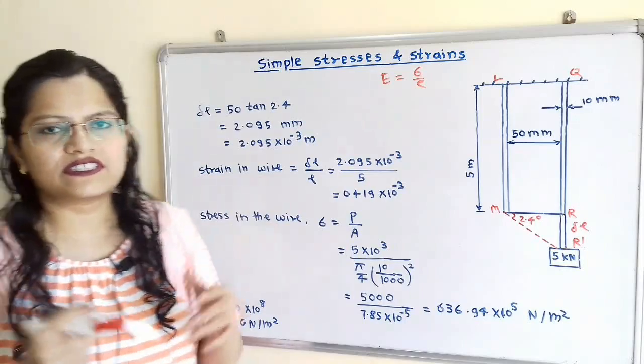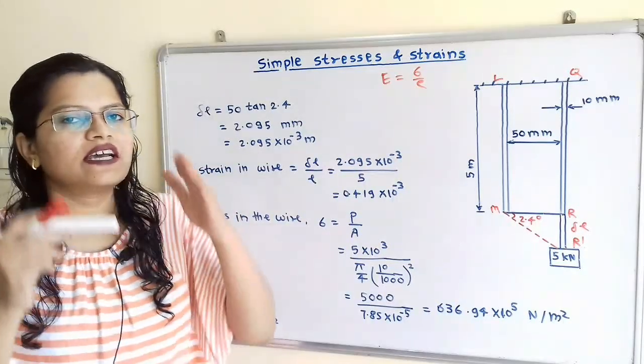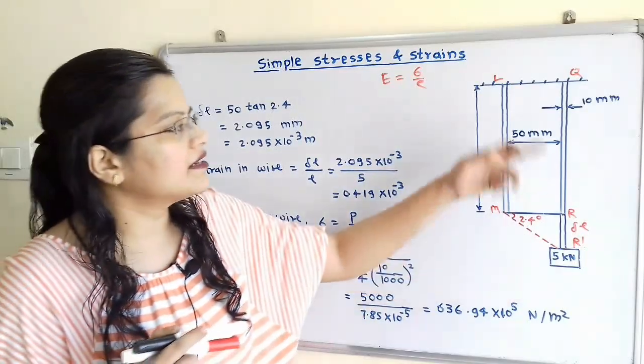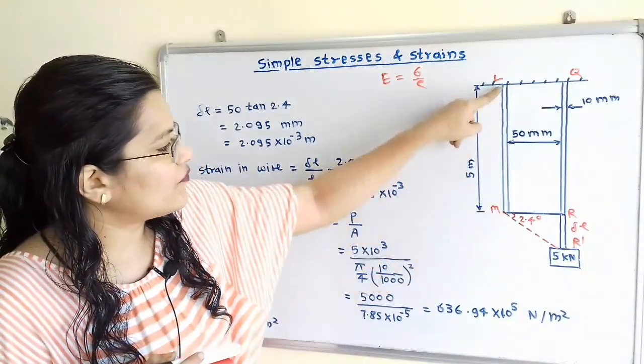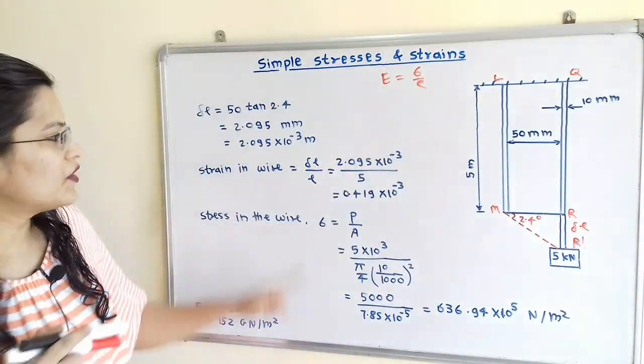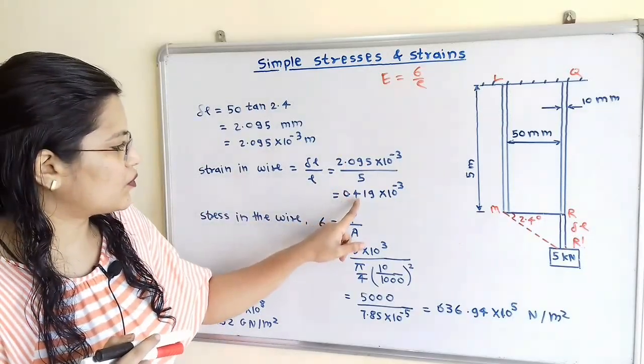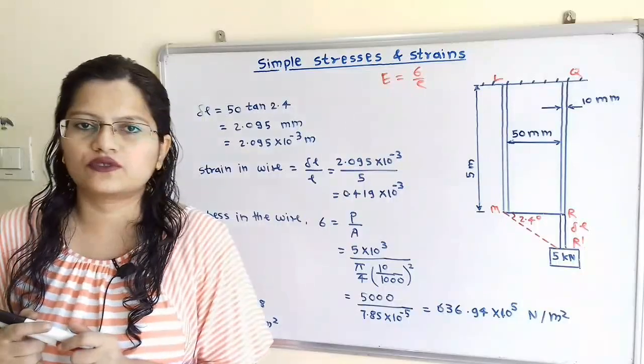Now we will find out strain in the wire. So strain is change in length by original length, that is delta L divided by L. So length of wire is 5 meters. So when we calculate this, then we will get strain is equal to 0.419 into 10 raised to minus 3.